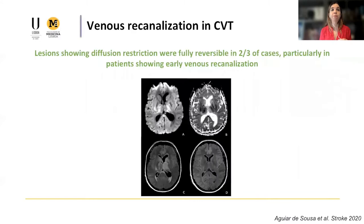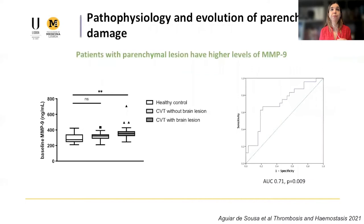In this study, we also found that — contrary to what happens in ischemic stroke — venous infarction, defined as diffusion restriction of brain lesions on MRI, is often reversible in patients with CVT, particularly patients achieving early recanalization. So again, we have this imaging predictor of the evolution of brain lesions that is different from ischemic stroke.